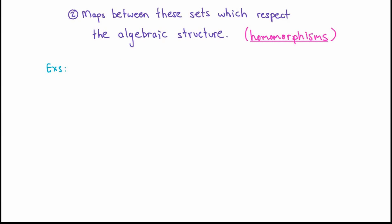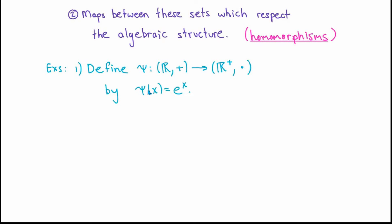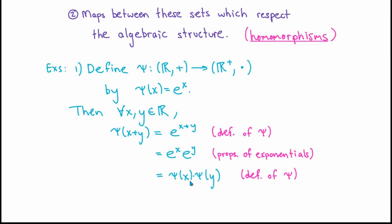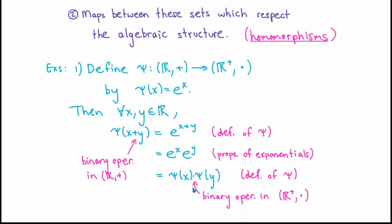What do we mean by maps between these sets which respect the algebraic structure? Let me give a couple of examples. First, consider the map ψ from the group of real numbers under addition to the group of positive real numbers under multiplication, defined by the rule that ψ(x) = e^x. Choose real numbers x and y in the domain, and think about what ψ does to x + y. By definition of ψ that's e^(x+y), and by properties of the exponential function that equals e^x times e^y, which equals ψ(x) times ψ(y). So ψ has taken two real numbers added together in the domain and mapped them to the product of their images in the codomain. This is what we mean when we say a map respects the algebraic structures, and ψ is what we would call a homomorphism of groups.